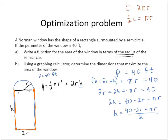I can take my area function and substituting for h, the area as a function of r is ½πr² plus 2r times (40 - 2r - πr) over 2. We can simplify this a little bit. These 2's will reduce out.